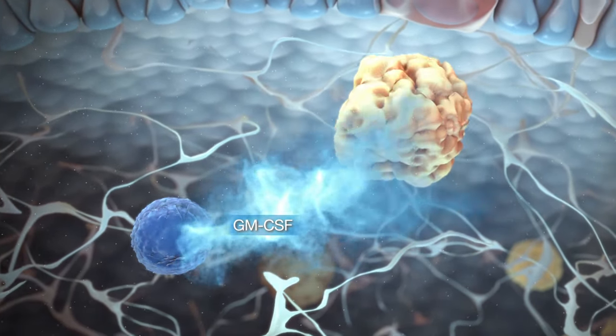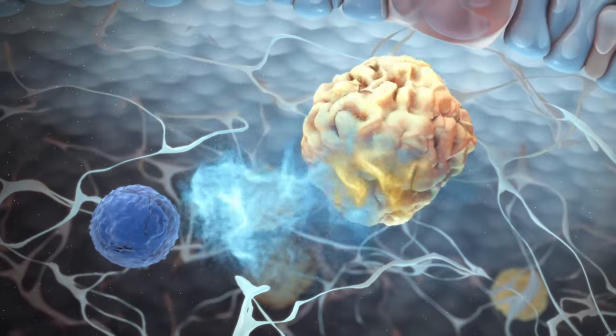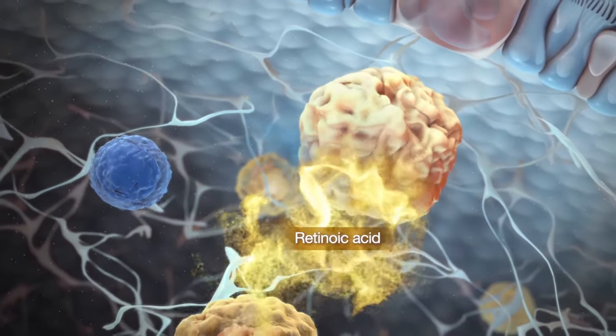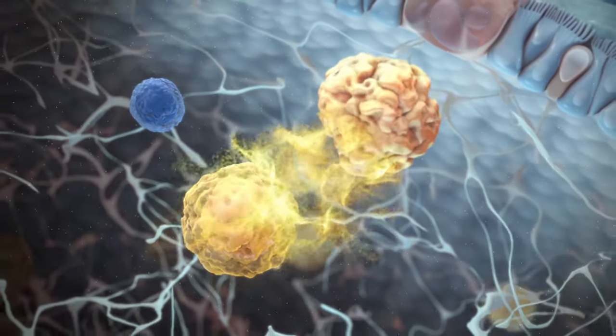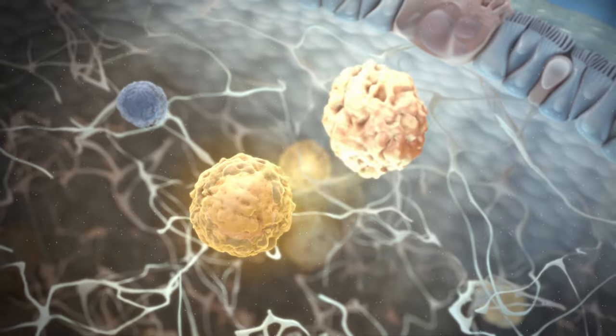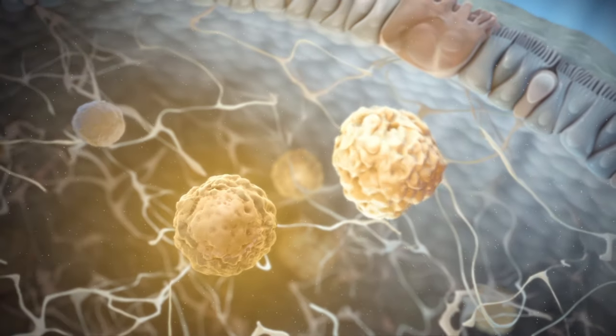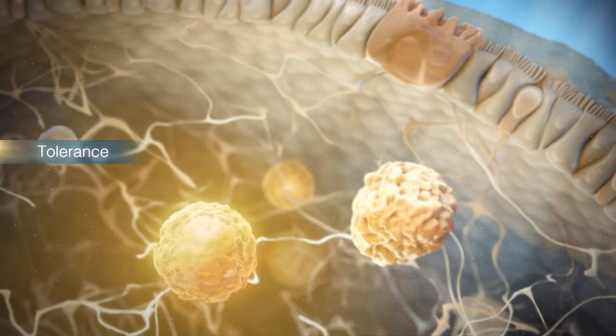GM-CSF signals back to macrophages to induce retinoic acid, which promotes the differentiation of regulatory T-cells. Regulatory T-cells are essential in maintaining tolerance towards the commensal microbiota.